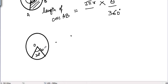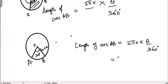πr times theta divided by 360 degrees, which equals 2 × 22/7 (the value of pi) × 10 × 30/360. The zeros cancel, and 3 cancels with 36 to get 12